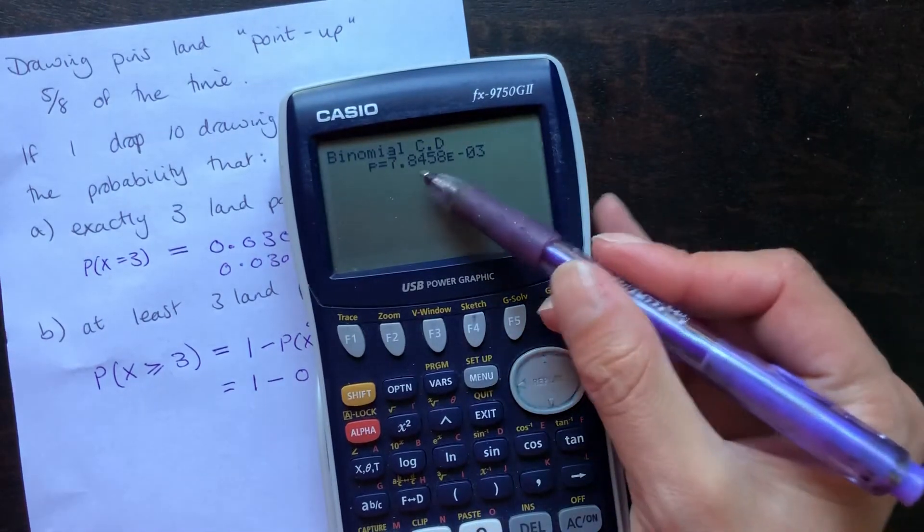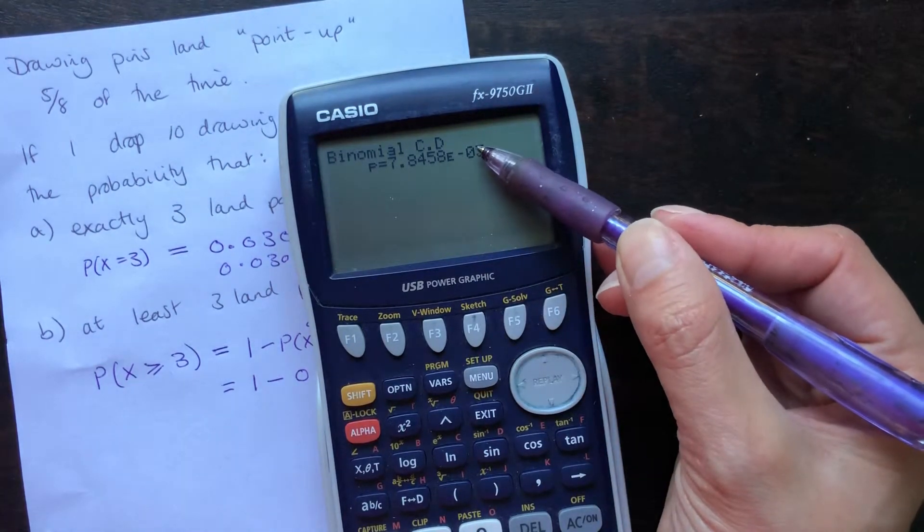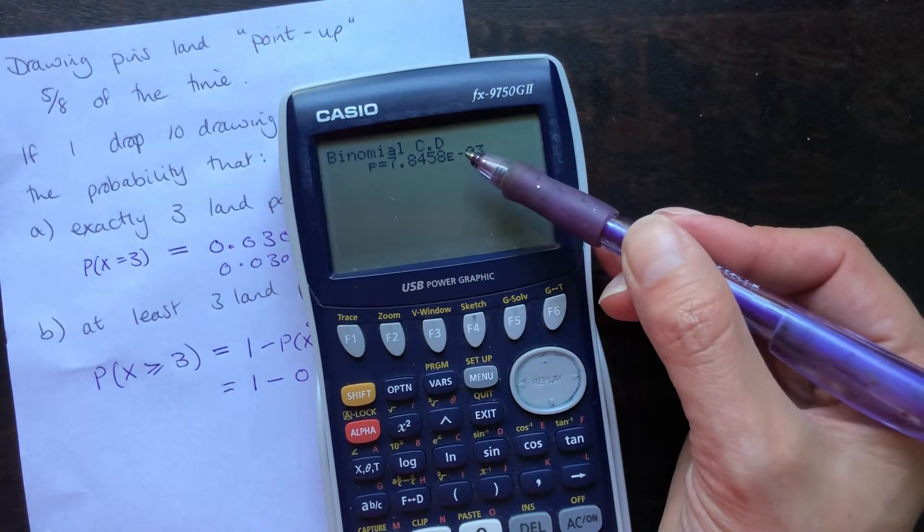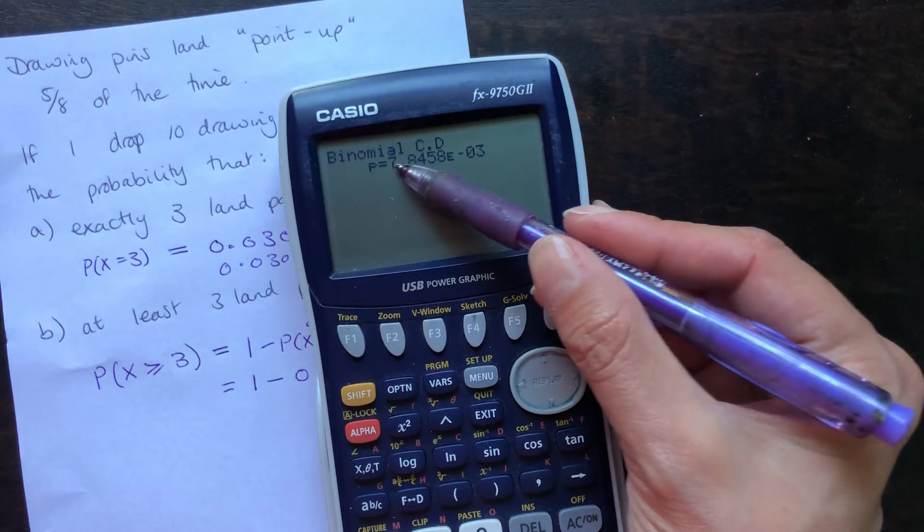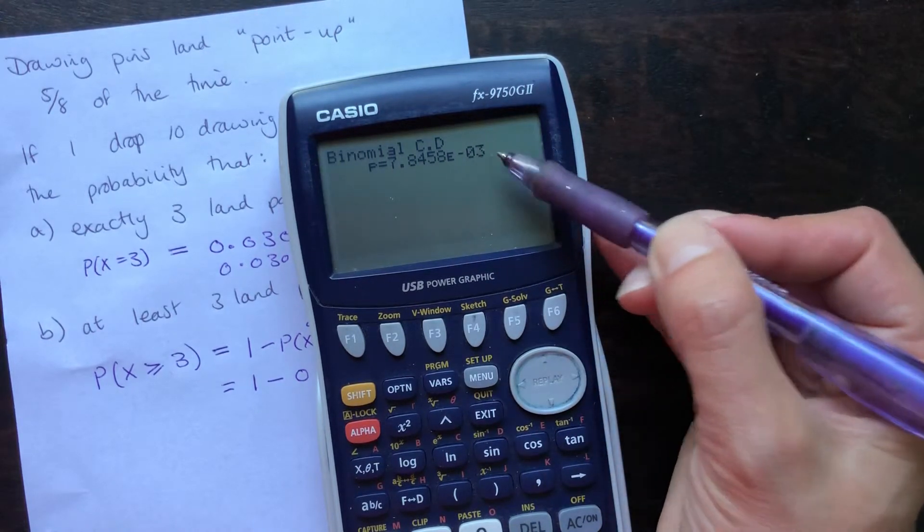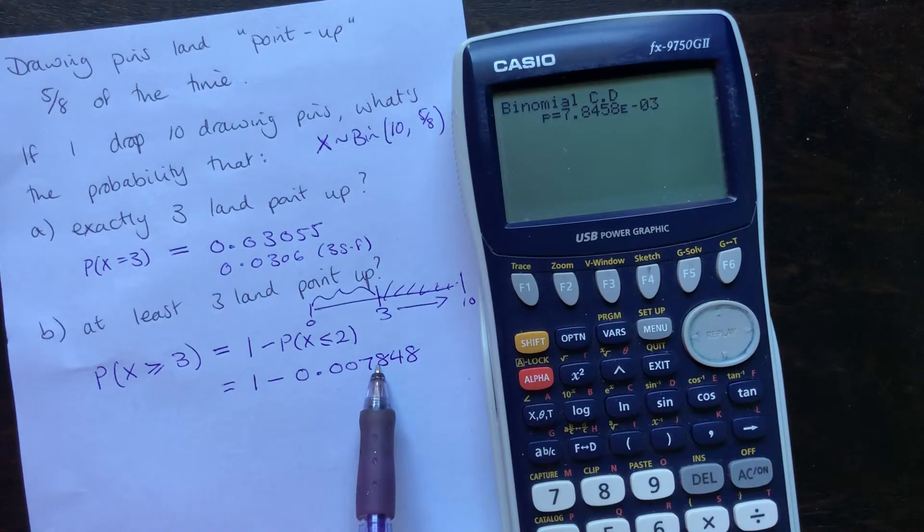Just one little note. If you get this e to the minus zero three thing, that means that it's quite a small decimal, and this number here will start on the third position after the decimal point. So, we've got one, two, three. That's where the seven starts.